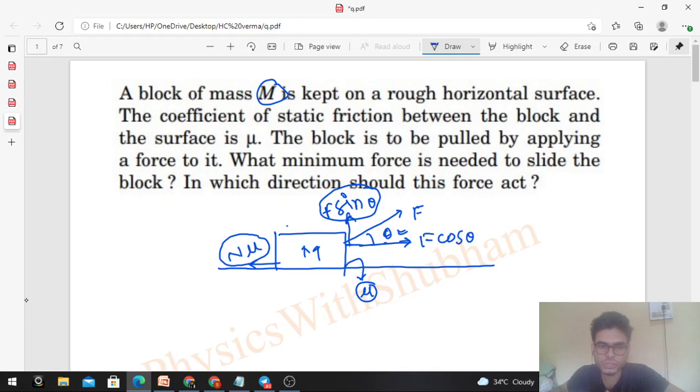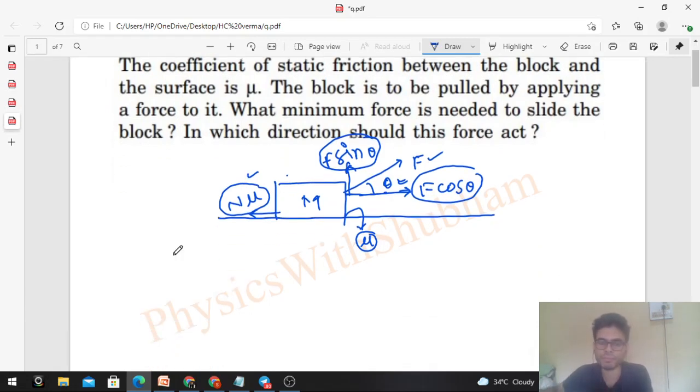Finally, we have to do the distribution in such a way that our F efficiency is maximum. Both components have a role to play in moving the box. F cos θ opposes friction and F sin θ reduces N. When N is reduced, then we have to find the value of θ.